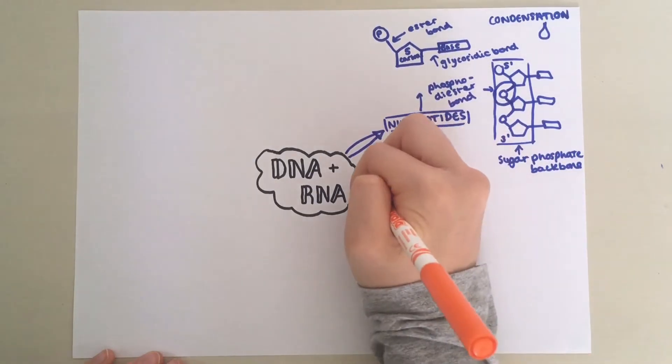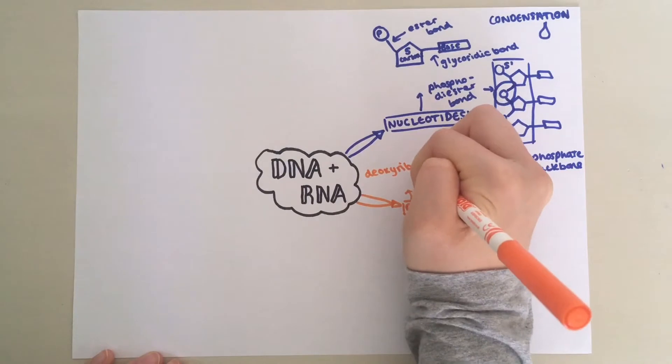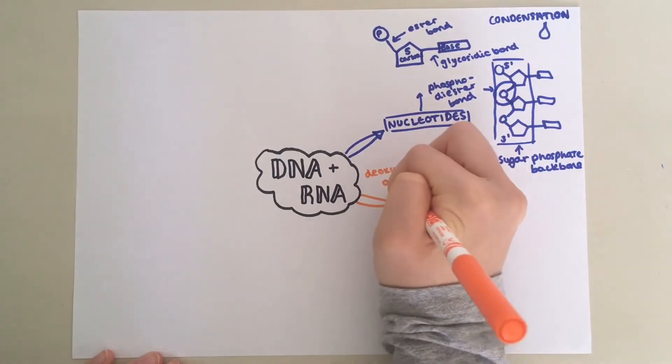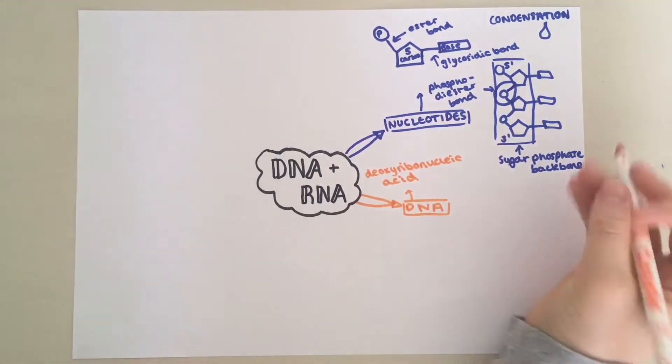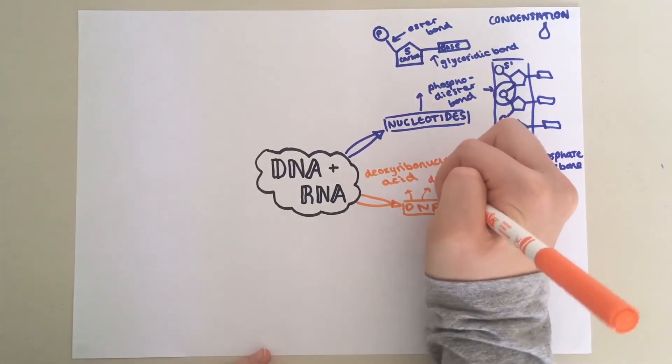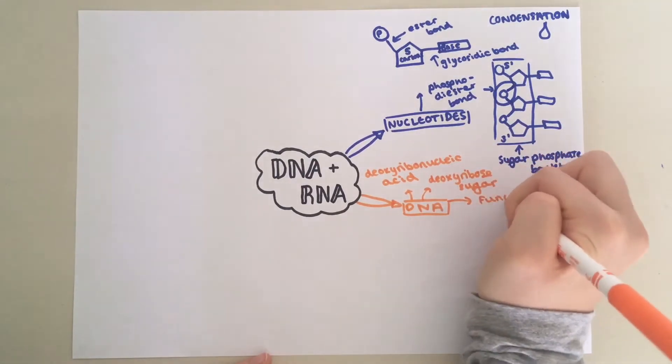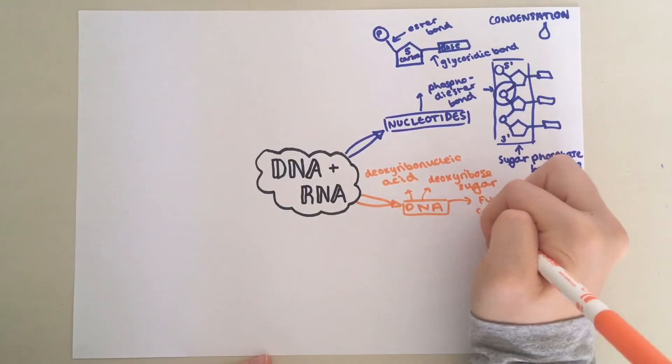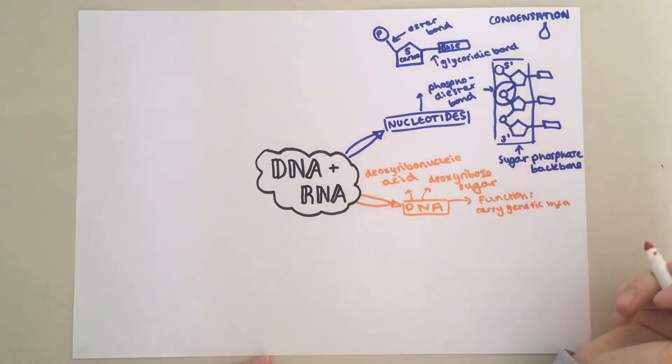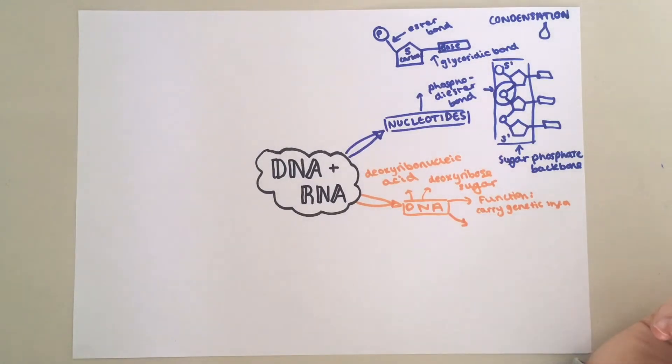DNA stands for deoxyribonucleic acid. This is because the pentose sugar in DNA is known as deoxyribose sugar. The function of DNA is to carry genetic information. That is all the instructions an organism needs to grow and develop.